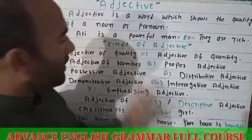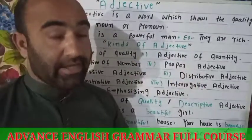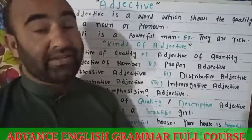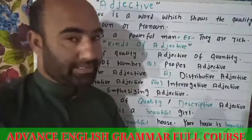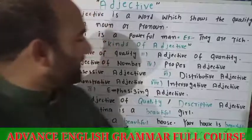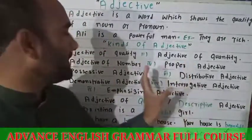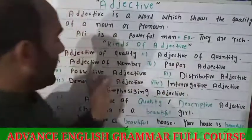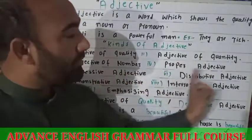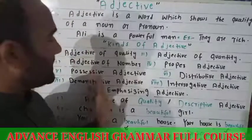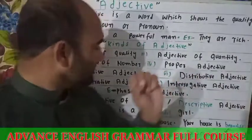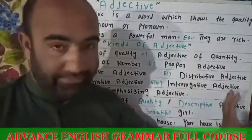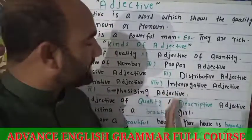Now we have to talk about the kinds of adjective. There are nine kinds of adjective. We will discuss them sequentially. They are: adjective of quality, adjective of quantity, adjective of number, proper adjective, possessive adjective, distributive adjective, demonstrative adjective, interrogative adjective, and emphasizing adjective.